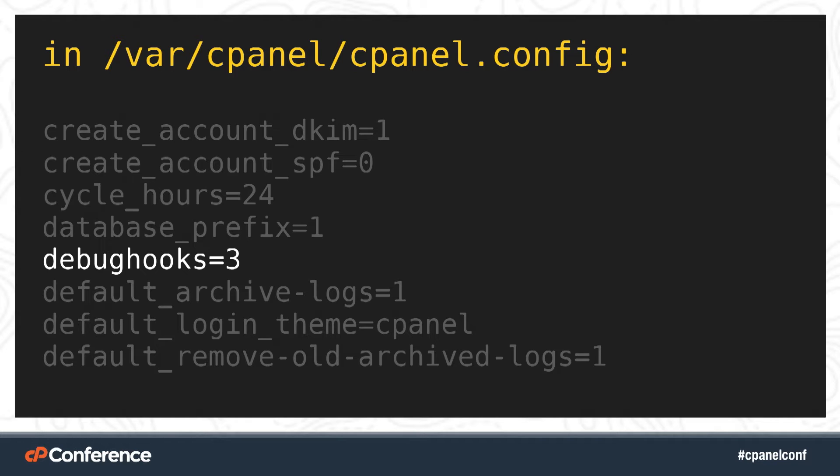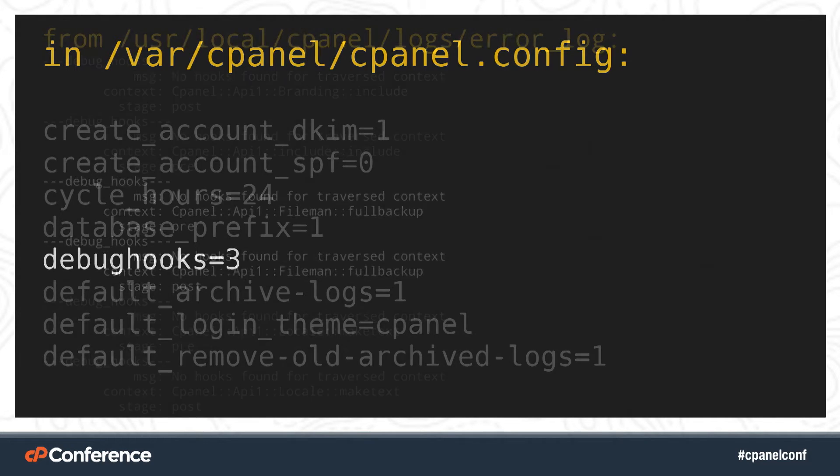Add this line — debug hooks equals three — to /var/cpanel/cpanel.config, restart cPanel, and then perform the action you want to hook. Please note: having debug hooks turned on generates a lot of output. You should not do this on a server with many users, and you should turn it back off — set it to zero — as soon as you've got the information you need.